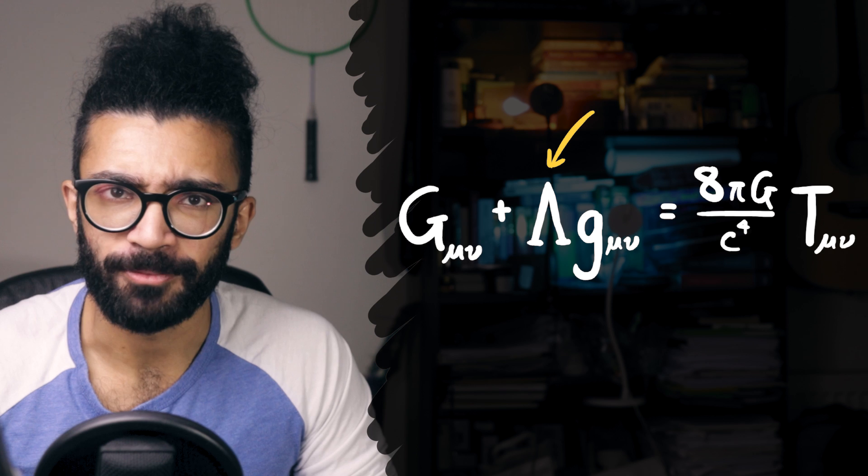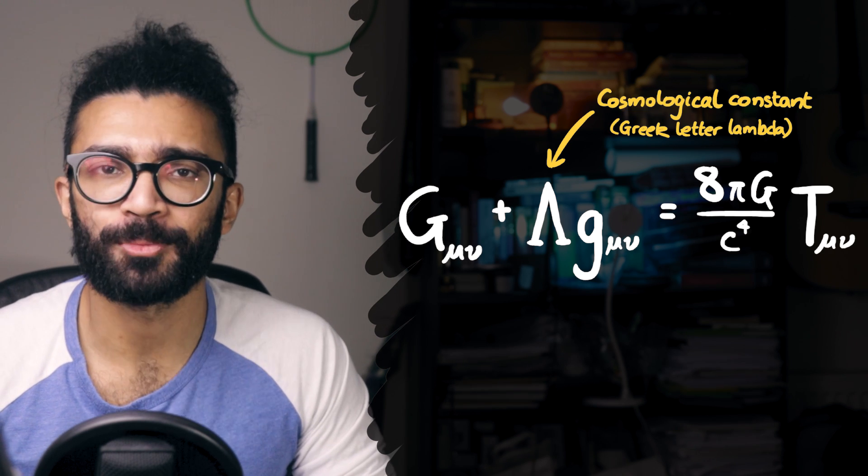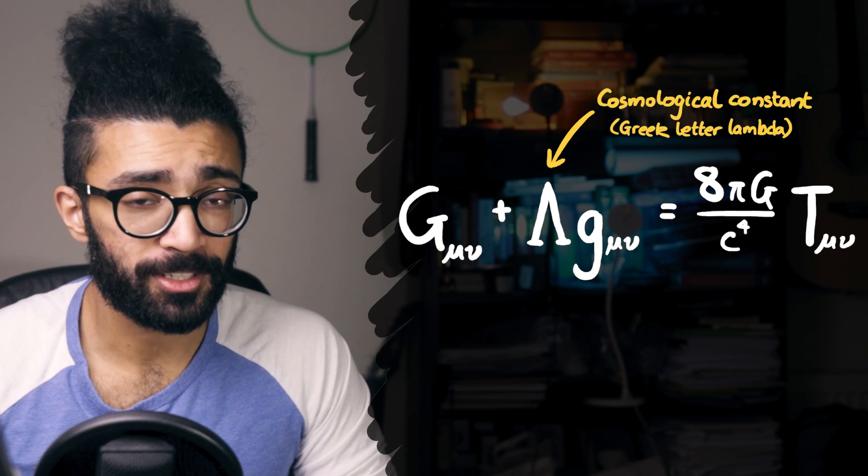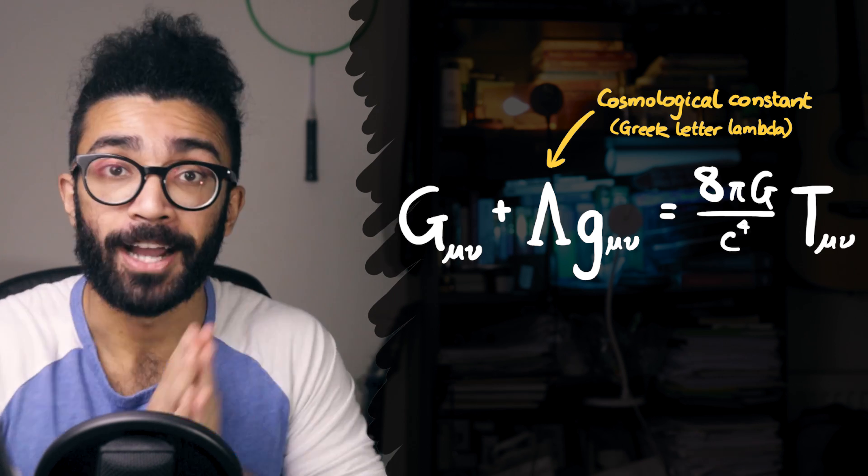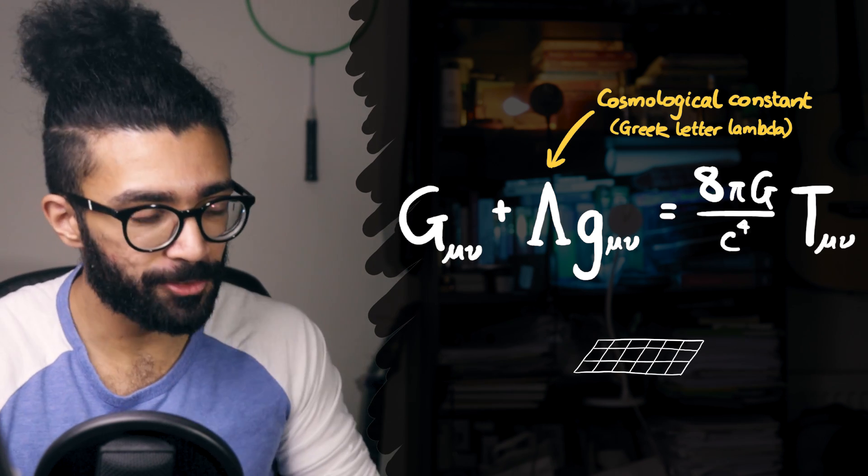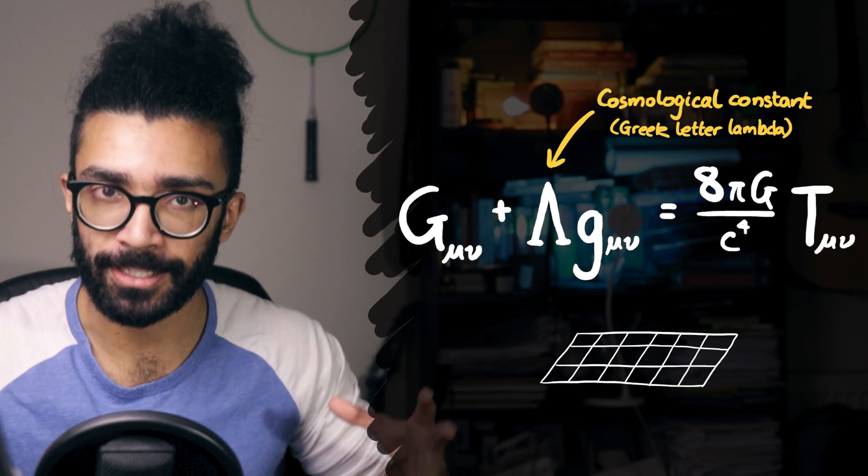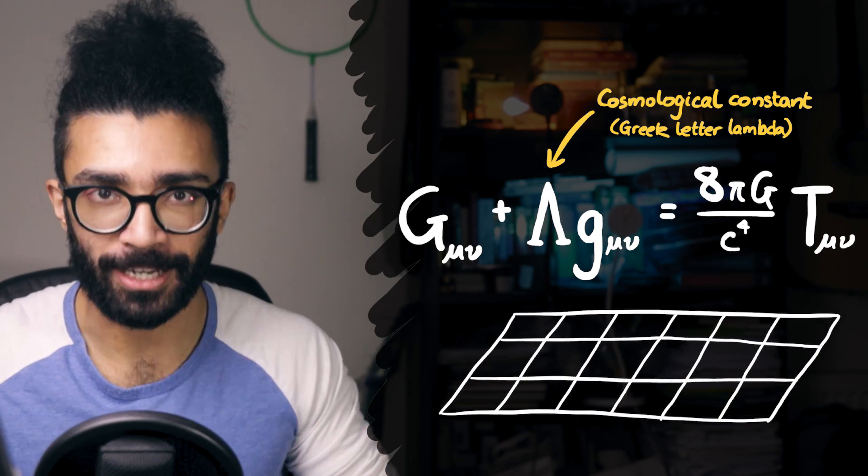This weird little constant here, this lambda, is known as the cosmological constant. And we could go on and on and on about it. Currently, in our mathematics, it accounts for the fact that our universe is expanding at a faster and faster rate.